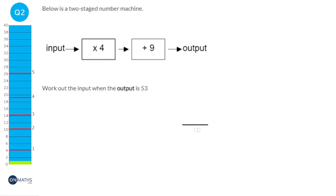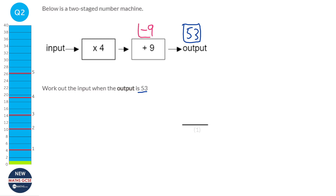In this question, we're given the output as 53. We've got to work backwards through a function machine. When we work backwards, we do the opposite of what it says. This first one says plus 9, but going backwards we do the opposite, which is take away 9. So we do 53 take away 9, which is 44. We can check that: 44 plus 9 is 53, so that works.